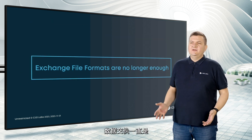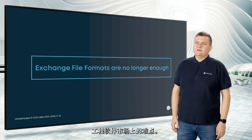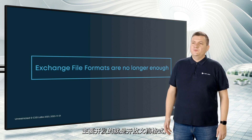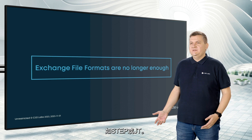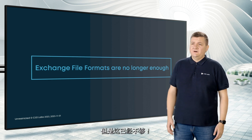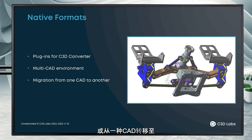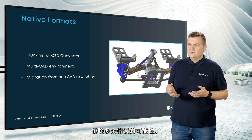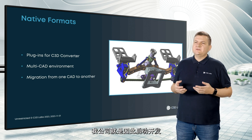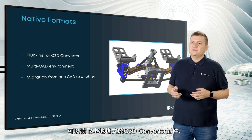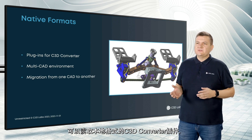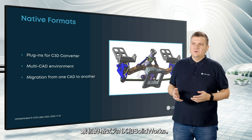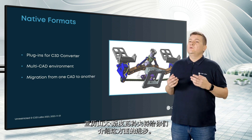Data exchange is a headache for the engineering software market. For many years we focused only on popular open formats like STEP or JT, but now it's not enough. In a multi-CAD environment or during migration from one CAD to another, it's much easier to read native file formats. This reduces the conversion chain and eliminates unnecessary errors. That's why we started the development of plugins to C3D Converter that can read native formats — first ones are NX and SOLIDWORKS. Alexander Spivakov will tell you why.